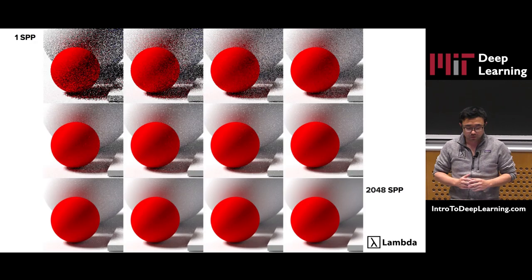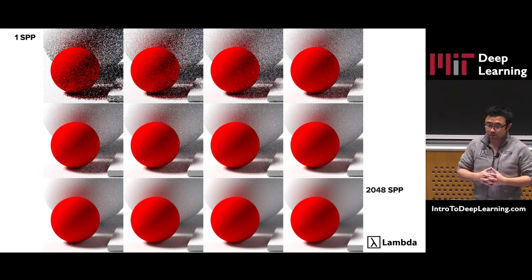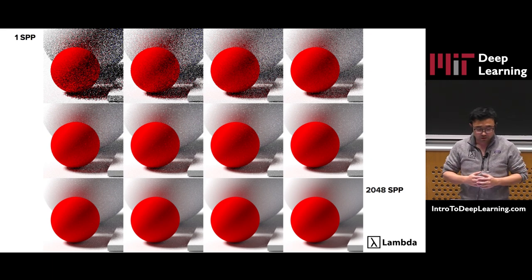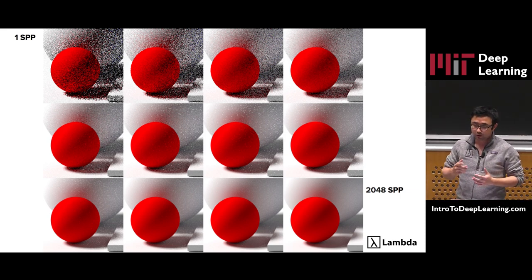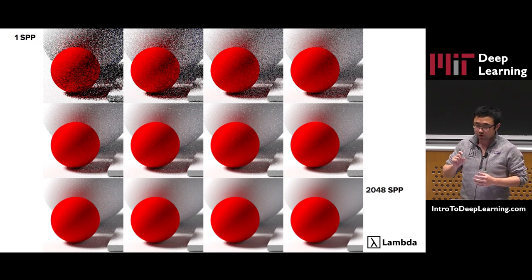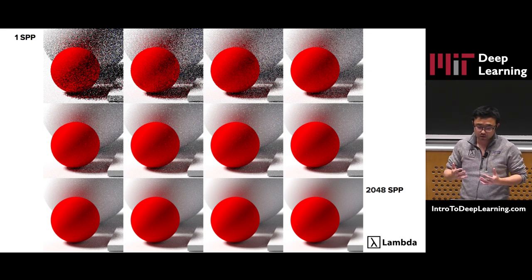Let's first start from the forward rendering process. As we mentioned before, Monte Carlo sampling is very expensive in this example. On the top left we have the noisy rendering with one sample per pixel, and the number of samples doubles from left to right and from top to bottom. As you can see, the result also improves, but at the same time the computational cost also increases.